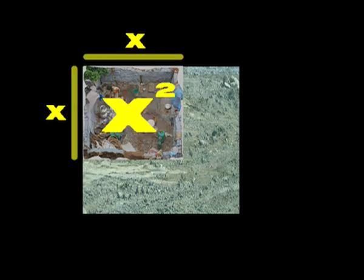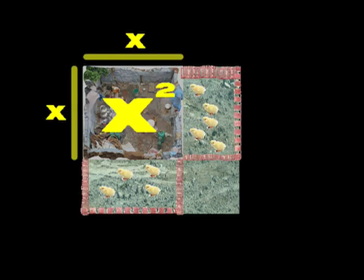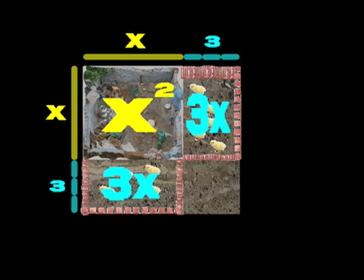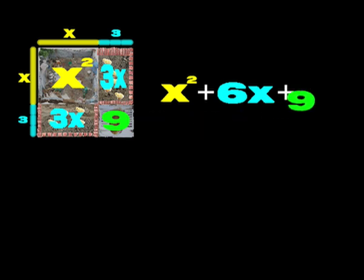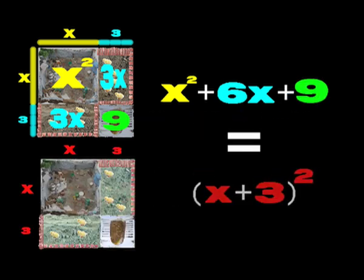But, how can you simplify x plus 3 squared? Well, I divided my new land into sections. I had the crunky shack, x squared. Then, down the new sides, I put the chicken runs. As long as the shack, but 3 meters wide. Each one is 3x. And in the corner, my dunny. 3 wide, 3 long, it is 9. x squared plus 3x, 3x and 9 makes x squared plus 6x plus 9. And this is the same as x plus 3 squared.